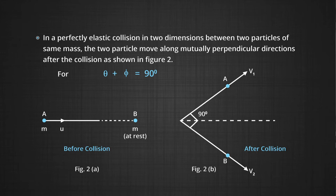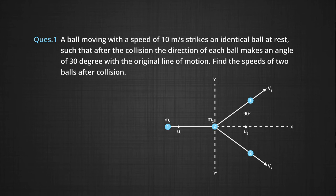By considering these points, now let's solve some problems. A ball moving with a speed of 10 m/s strikes an identical ball at rest, such that after the collision, the direction of each ball makes an angle of 30 degrees with the original line of motion. Find the speeds of the two balls after collision.